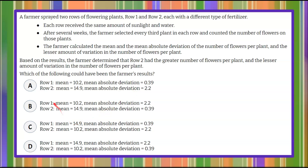Which of the following could have been the farmer's results? We have four answer choices to pick from, comparing row one and row two with a proposed mean and mean absolute deviation. Using the information provided, we need to select the answer. Here's where you pause the video, do your best work, and then come back and hit play to see mine. Good luck.